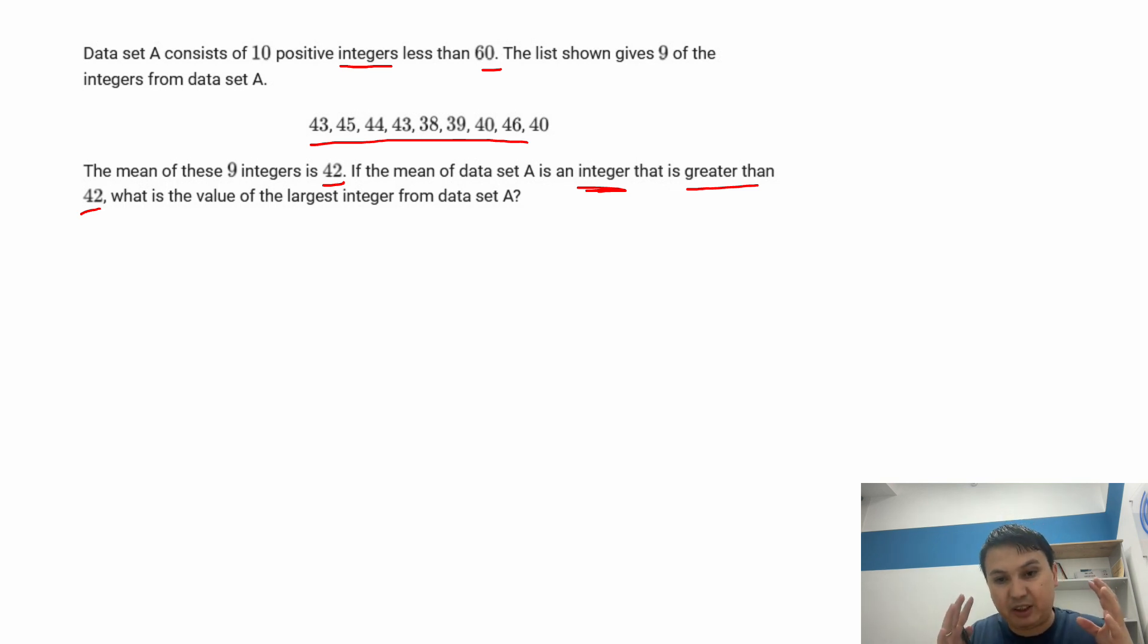So we need to find all 10 of them and pick the maximum, right? All right. So let's say that our unknown one is x. So now if the average of 9 of them is 42...